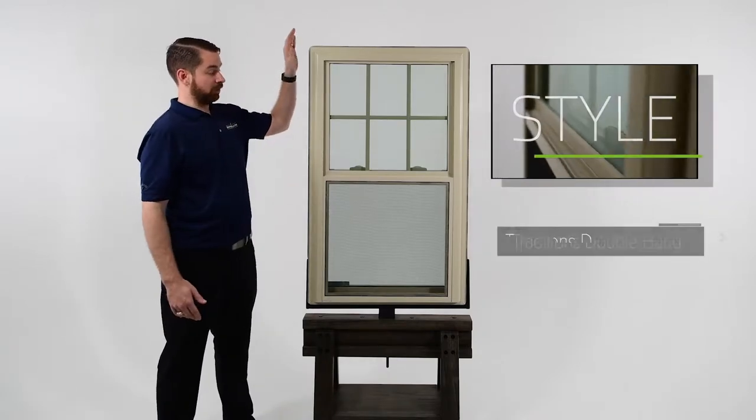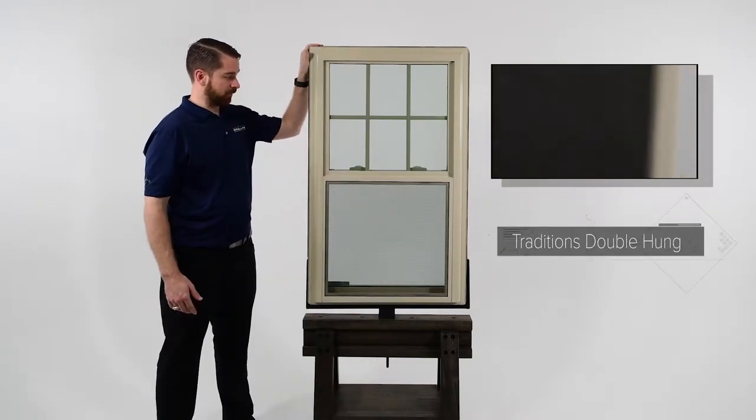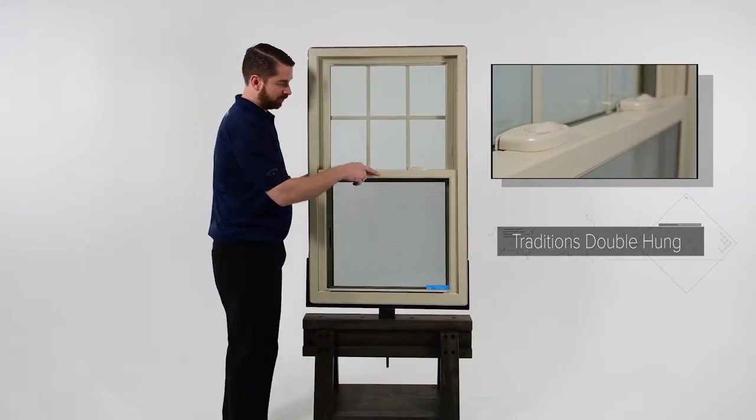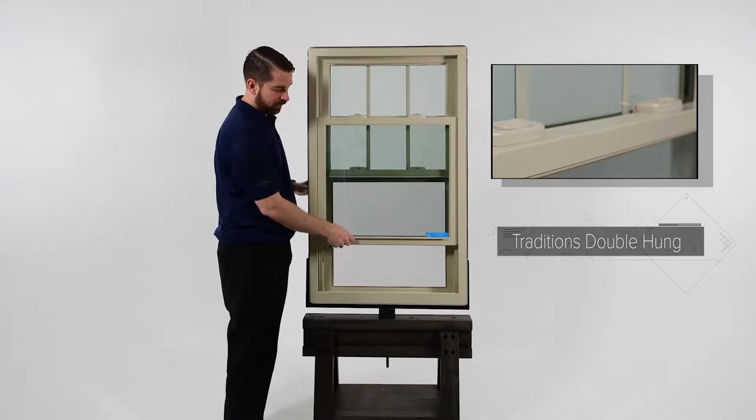This is the Traditions Double Hung Window. Similar to a single hung, the bottom sash slides vertically to allow for ventilation.